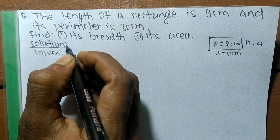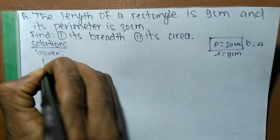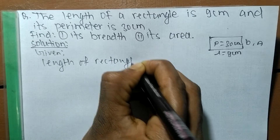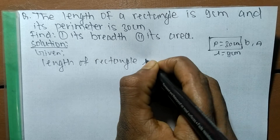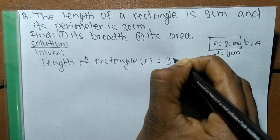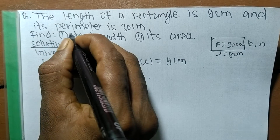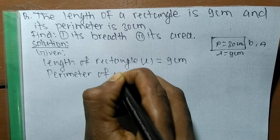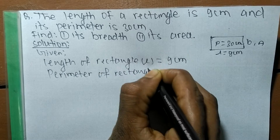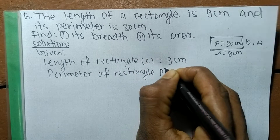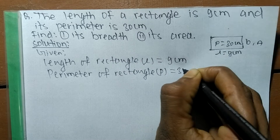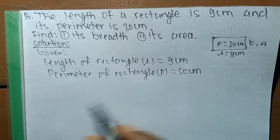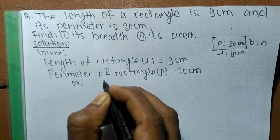Given: the length of the rectangle — we denote length by L — is equal to 9 centimeters. We are also given its perimeter — we denote perimeter by P — is equal to 30 centimeters. We have to find out its breadth and its area.